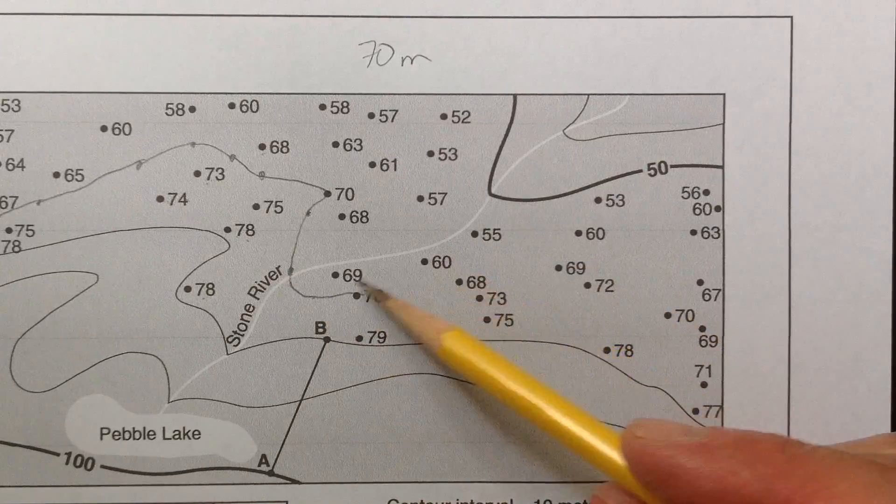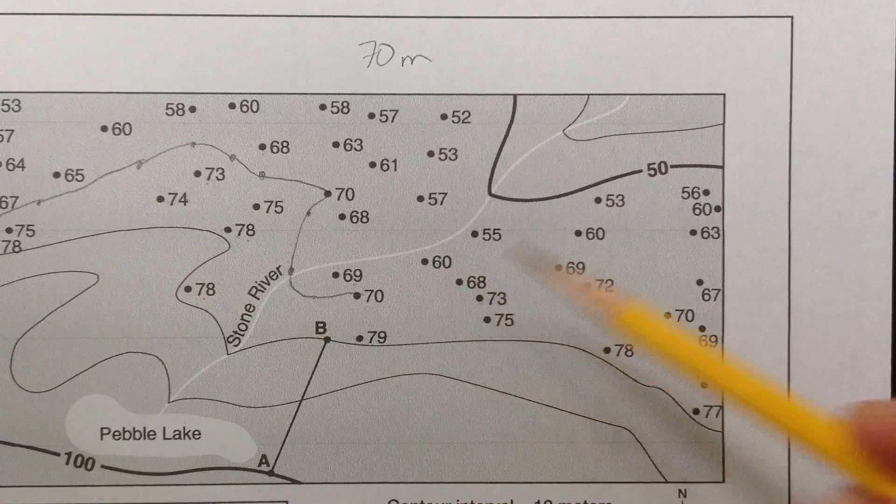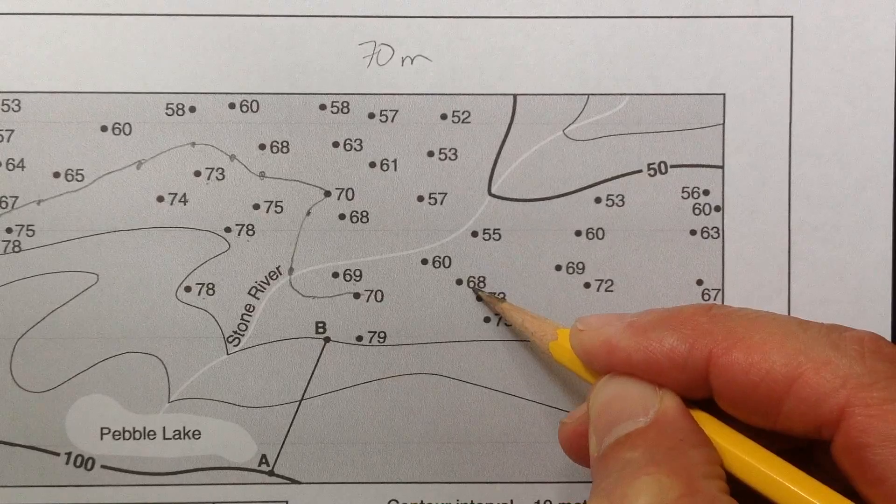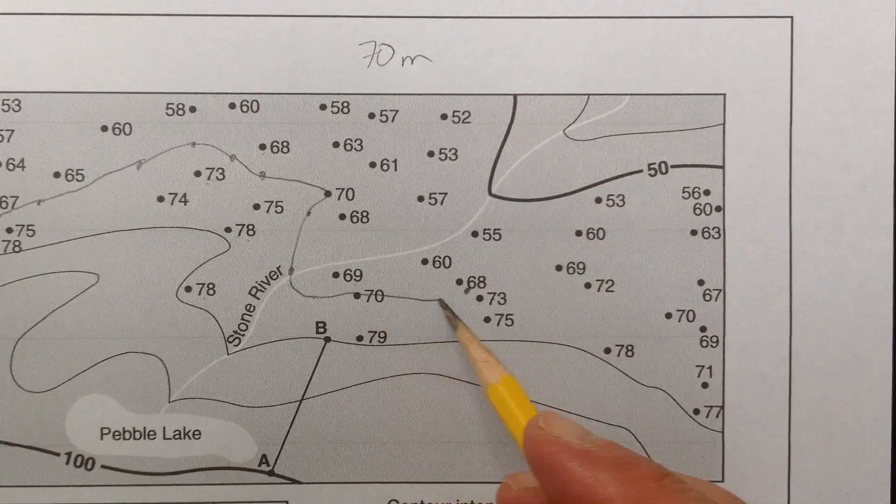And then the next 70 is not between 69 and 60. And 70 is not between 60 and 68. But it is between 68 and 73. Now it's got to squeeze it in there. Put a dot right there. I just can't touch either of them.